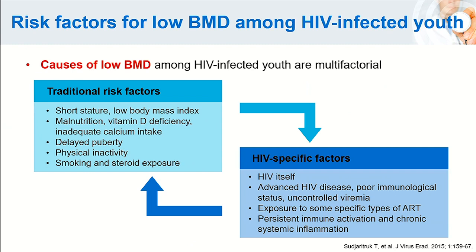Traditional risk factors include short stature, malnutrition, vitamin D deficiency, inadequate calcium intake, physical inactivity, as well as smoking and steroid use, all of which may compromise bone. HIV-specific factors include HIV infection itself, advanced disease, exposure to some specific types of ART, and persistent immune activation and chronic systemic inflammation, all of which can contribute to low bone mineral density.